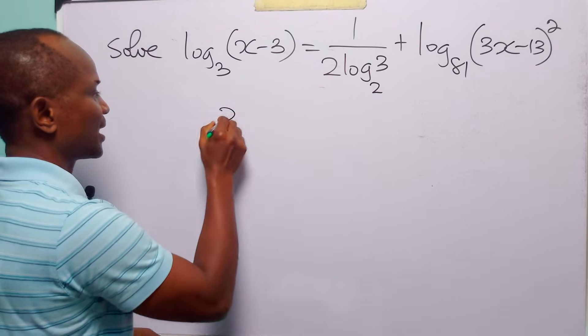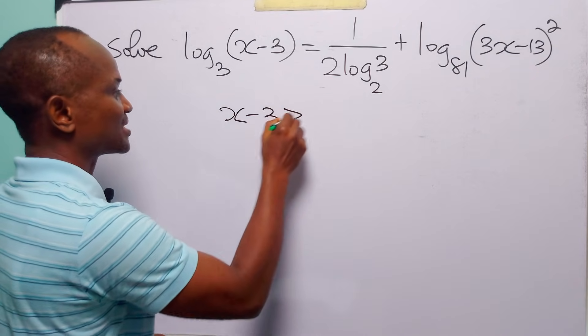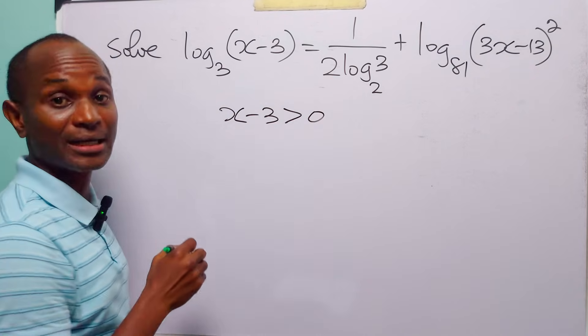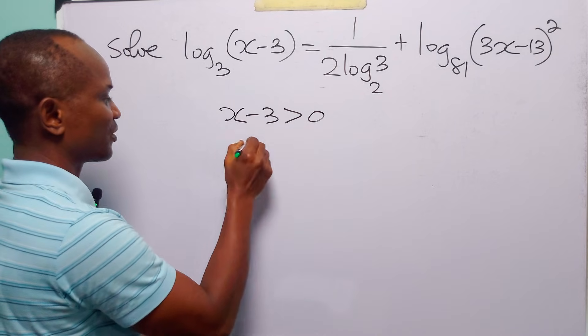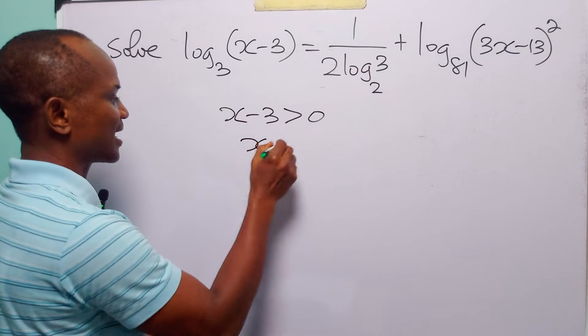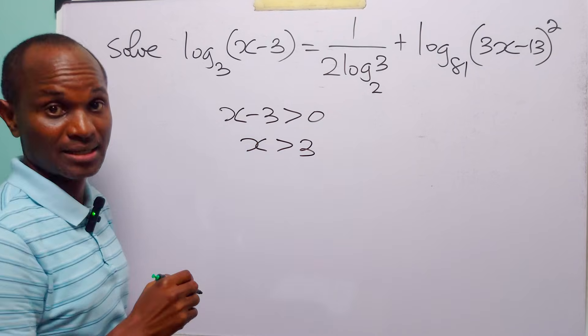So, x minus 3 must be greater than 0. And of course, from here we have that x must be greater than 3.